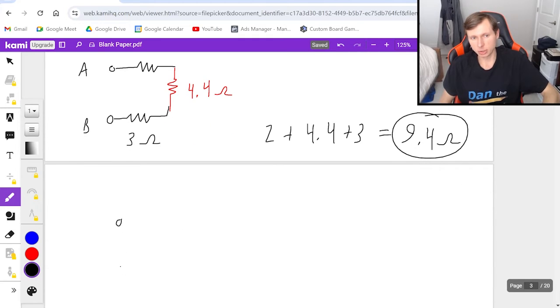So even though I don't need to draw this, I'll do it anyway. The space between A and B can be modeled by a single resistor with resistance 9.4 ohms. And that's how we do this first one.